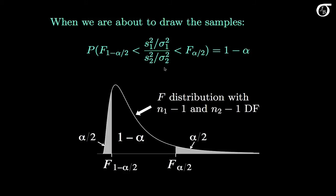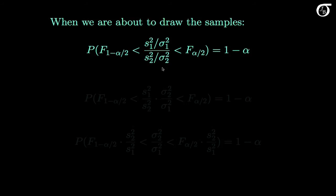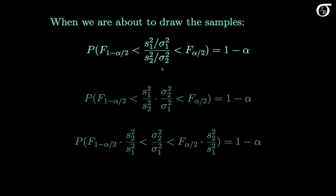Now we're going to isolate sigma 1 squared over sigma 2 squared, because that's what we want a confidence interval for. First I'm going to rewrite this middle part — when we divide by a fraction we multiply by its reciprocal, so this middle quantity can be expressed this way. And to isolate this ratio we need to divide by s1 squared over s2 squared, which is the same as multiplying by s2 squared over s1 squared. We'd be close to done if we were looking for a confidence interval for sigma 2 squared over sigma 1 squared, but we actually wanted an interval for the ratio with sigma 1 squared on top.